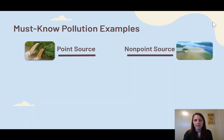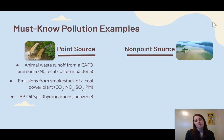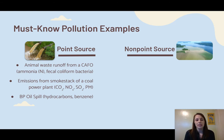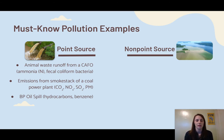Let's talk about some common examples, especially ones you might want to be aware of. For point source pollutants, some examples would be animal waste runoff from a CAFO — our big feeding lots where they're going to have high amounts of ammonia and fecal coliform bacteria. You can point to exactly where that CAFO is and exactly where the runoff is from. Another one is emissions from a smokestack of a coal power plant — you can point to the exact power plant and smoke coming out of it. Or something like an oil spill, such as the BP or Exxon oil spill — you can specifically point to exactly where that spill happened, where we're getting hydrocarbons and benzene into the environment.